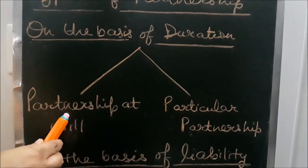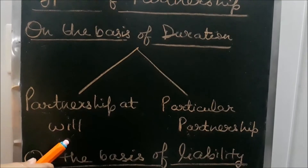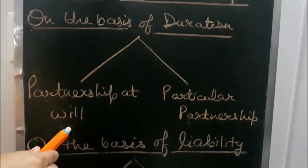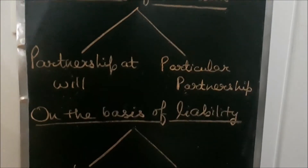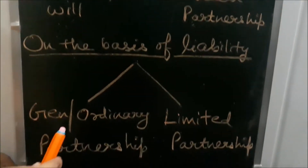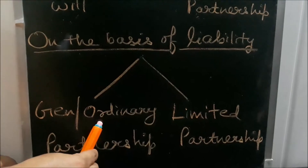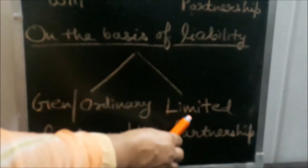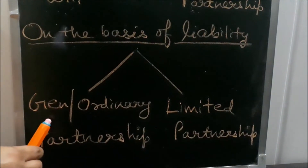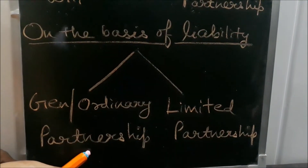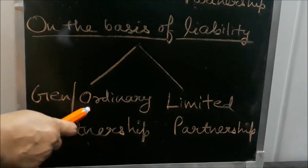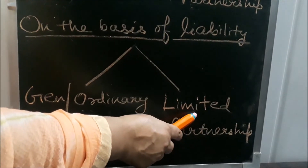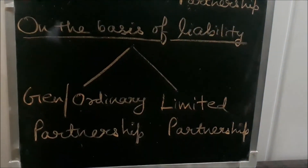Now we will move to the next type, that is partnership on the basis of liability. On the basis of liability, partnership can again be of two types: general or ordinary partnership, and limited partnership. I will tell you five things about general partnership and five things about limited partnership.